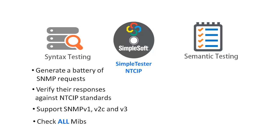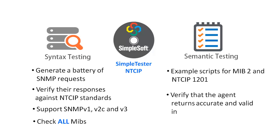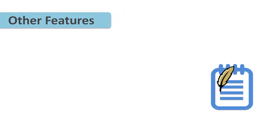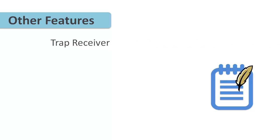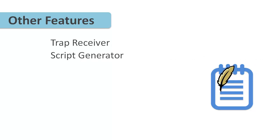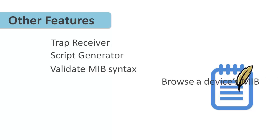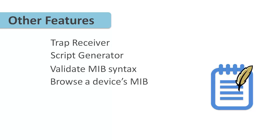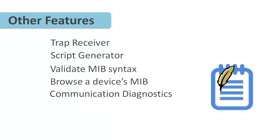Semantic test suites for popular MIBs such as MIB2 and the NTCIP Global MIB verify that the information returned by the device is accurate and valid. In addition to SimpleTester's automated test suites, it includes utilities such as a trap receiver that verifies the traps that are received, and a script generator. The MIB compiler can be used to validate the syntax of your MIBs. You can browse a device's MIB and also run general communication diagnostics.